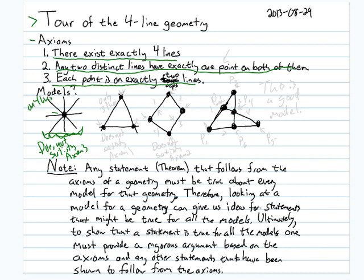The second model actually satisfies axioms 2 and 3 — any two distinct lines have exactly one point on both of them, and each point is on exactly two lines. But we happen to be violating axiom 1, which says there exist exactly four lines, because this model only has three lines. So this does not satisfy axiom 1.